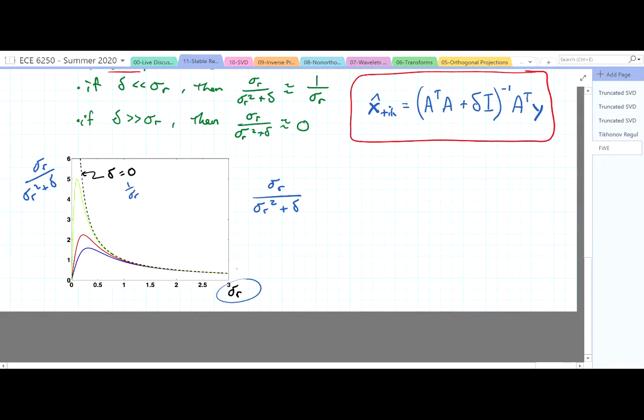On the other hand, as delta increases, we have these green, then red, then blue plots. And we can see that there's a large region where the two expressions are essentially identical. So there's no downside for when we have large singular values but having a little bit of delta in there.